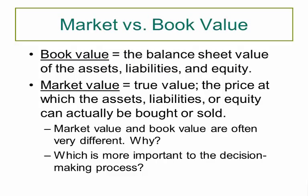Book value is the historical purchase price of an asset as recorded on the balance sheet — it stays on the balance sheet for assets, liabilities, and equity. Market value, by contrast, is what assets, liabilities, or equity can actually be bought or sold for today. Accounting decisions are typically made using book value, while financial decisions are based on market value. For example, when we say a company has increased in value, we're referring to its market value, not book value.